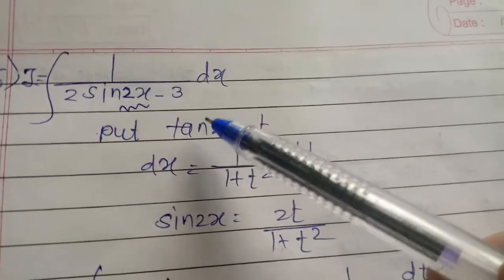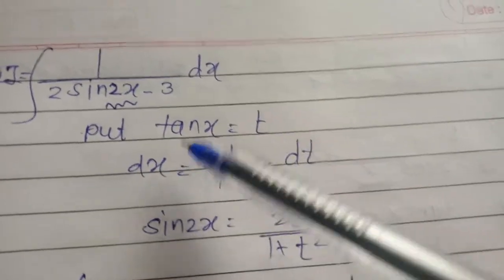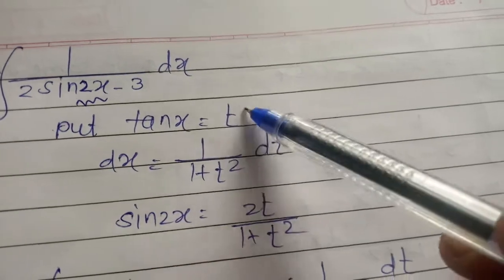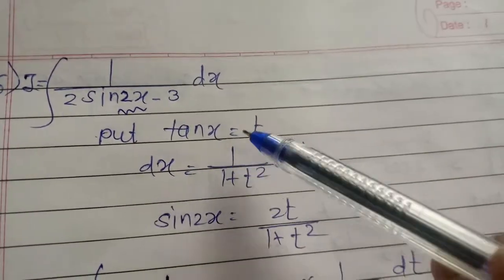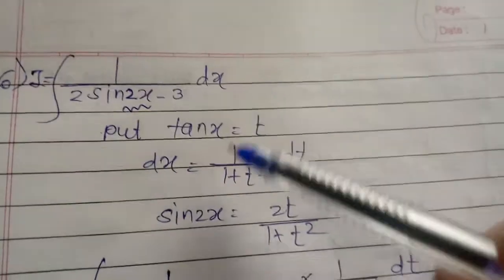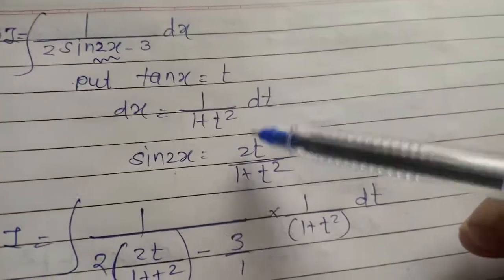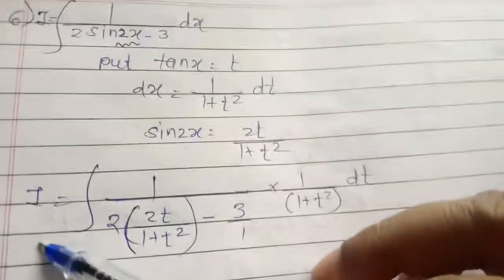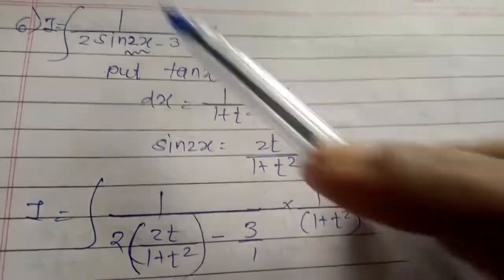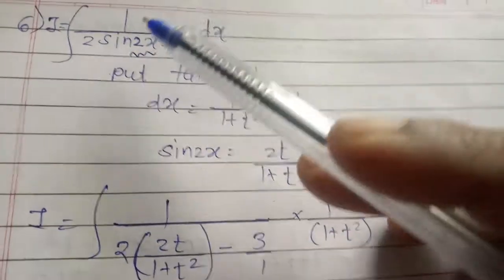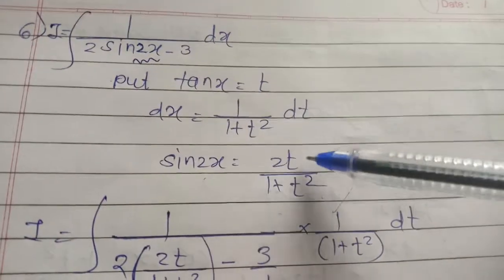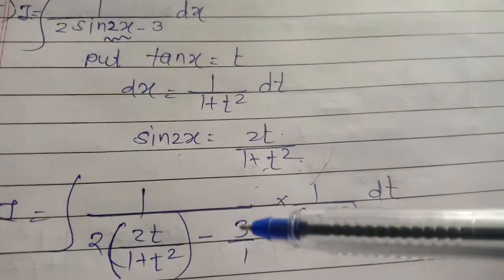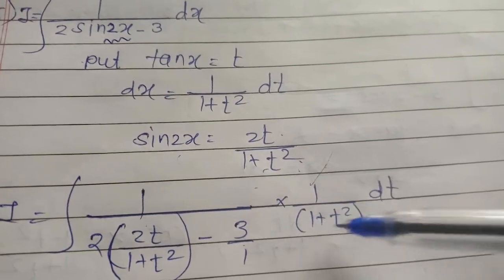For the tan (x by 2) equals t substitution: differentiating gives 1 upon (1 plus t square) dx equals dt, so dx equals 1 upon (1 plus t square) dt. For sin 2x, the value is 2t upon (1 plus t square). The example for Example 6 has sin 2x in the denominator, so: I equals integration of 1 upon [2 sin 2x minus 3] into dx. Putting the value of sin 2x as 2t upon (1 plus t square), and dx as 1 upon (1 plus t square) dt.